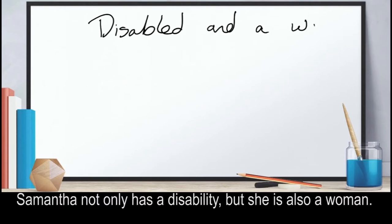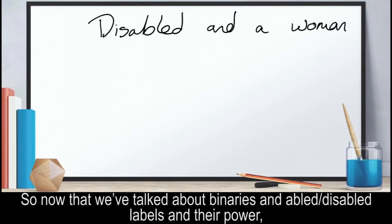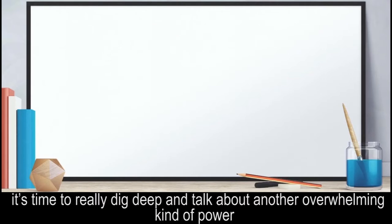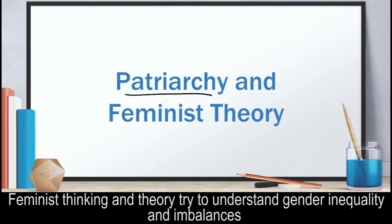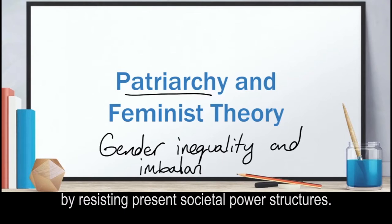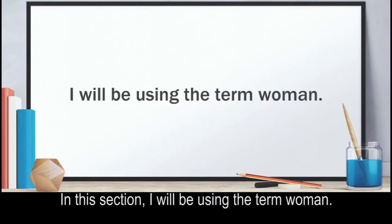Samantha not only has a disability, but she is also a woman. So now that we've talked about binaries and the able-disabled labels and their power, it's time to really dig deep and talk about another overwhelming kind of power: the patriarchy. Feminist thinking and theory try to understand gender inequality and imbalances by resisting present societal power structures. In this section, I will be using the term woman.